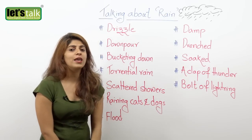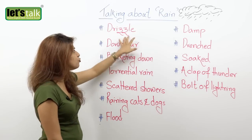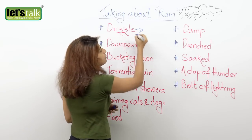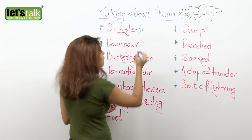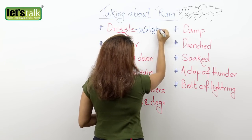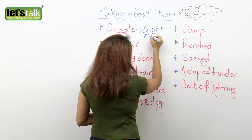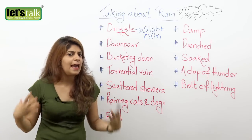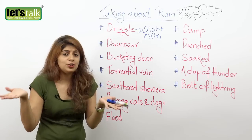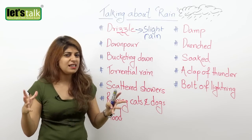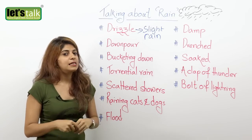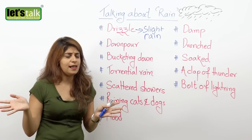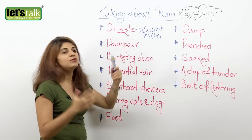The very first one that I have for you is to drizzle. Now drizzle is fine drops of rain, or very light rain. So when you step out, it's not raining heavily. However, it's just fine drops that you can feel on your body, so that's not exactly raining. You can say, oh it's drizzling outside. So very fine drops of rain that you can feel on yourself — that's drizzling, or drizzle.